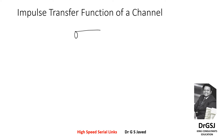Every channel can be defined to have a transfer function which can be identified by passing a single bit of information or an impulse through it. The output of the channel will have a certain characteristic showing how this single input pulse bit has come through, and that output characteristic will inform the nature of the channel.